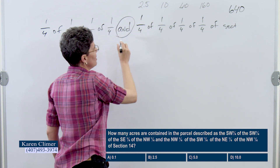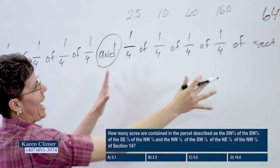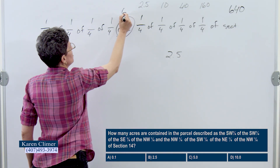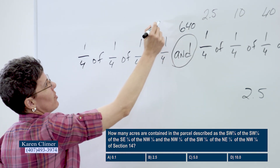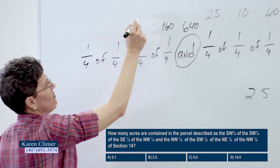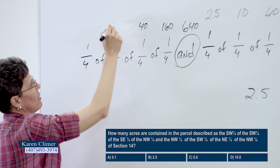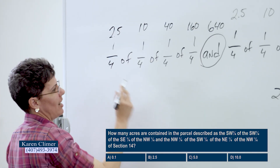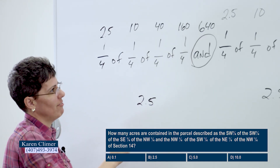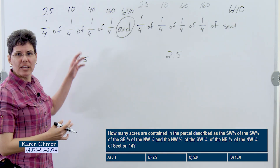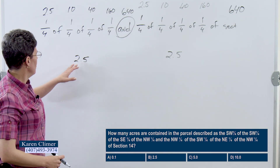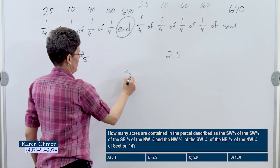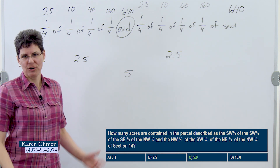When you get to the word 'and,' we start over. So this first half of the legal description is 2.5 acres. If any of these had been a different number — if it had been 2 — you would just divide by 2. We've got 2.5 acres and 2.5 acres, so we just add those up. The answer is 5, which in our case is answer C.